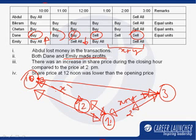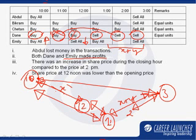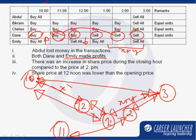Hence when comparing from 12 noon to 1 p.m., Dane also made a loss. But overall he made a profit, which means the packet he bought at 11 a.m. and sold at 2 p.m. must have been profitable. This profit has to offset the losses in the other two parts of the transaction, and hence the price at 11 a.m. has to be lower than the price at 2 p.m. So I get the relation: price at 11 a.m. is definitely less than price at 2 p.m.